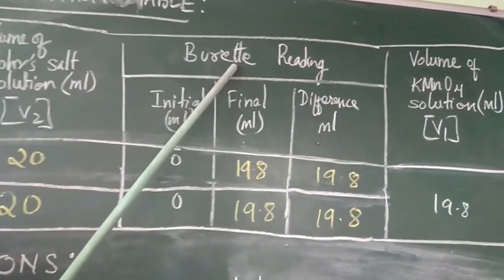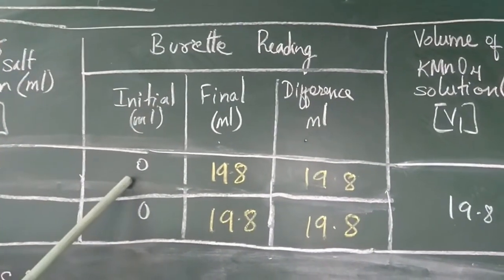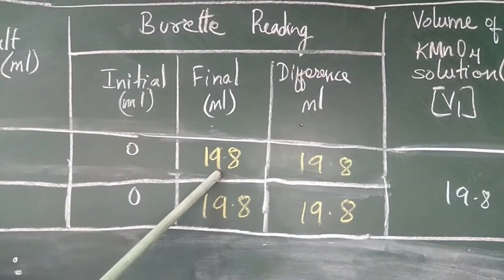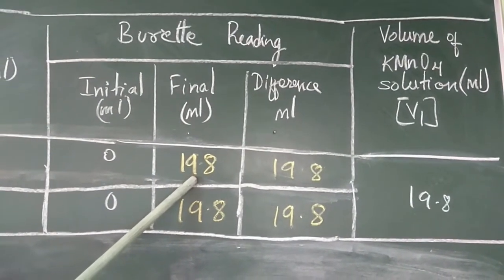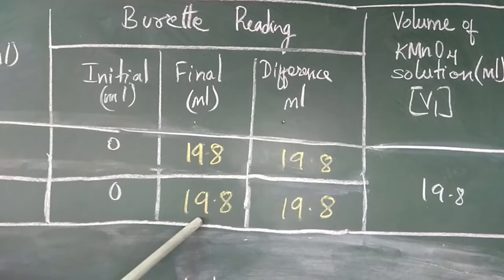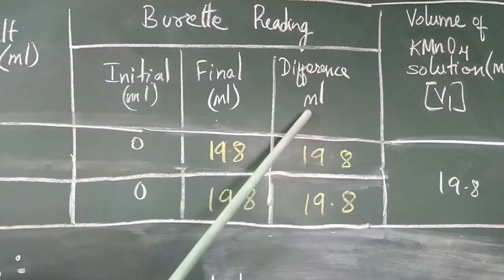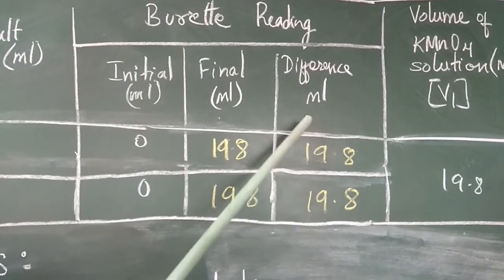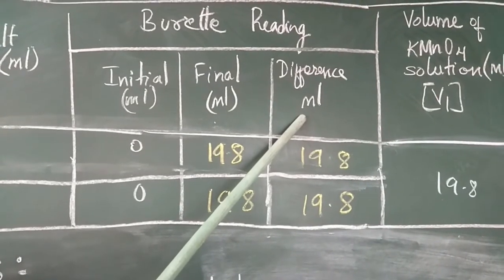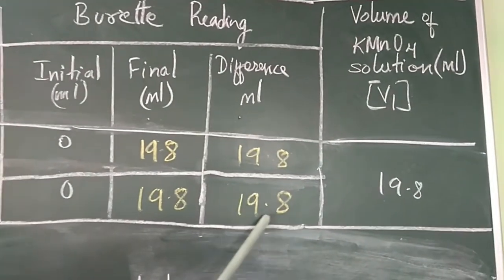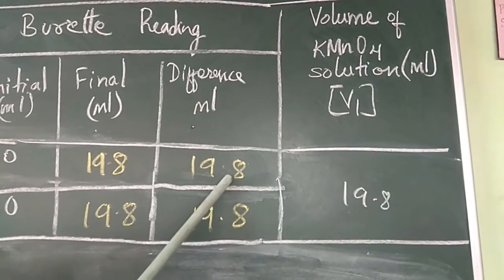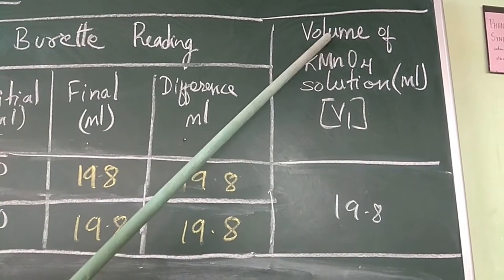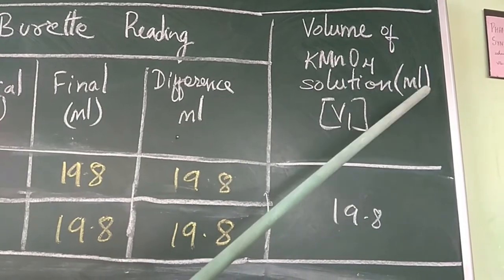The burette readings: initial burette reading is always 0. Final reading for the first experiment is 19.8, and for the second time also 19.8. The difference between final and initial volume is 19.8 ml. The average of these two observations is 19.8 ml, which is nothing but the volume of KMnO4 solution in ml, also known as the titre value, denoted as V1.